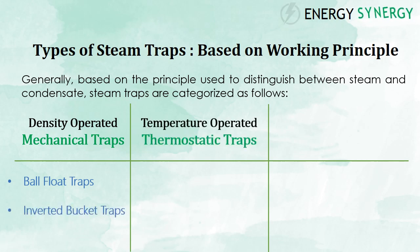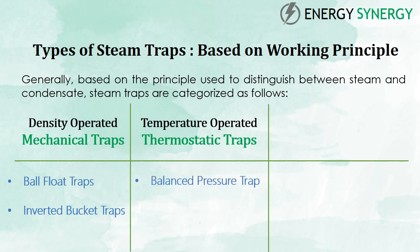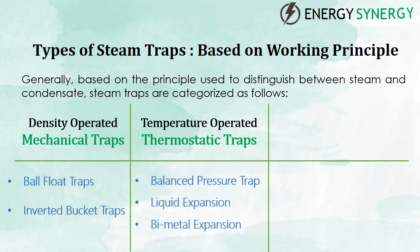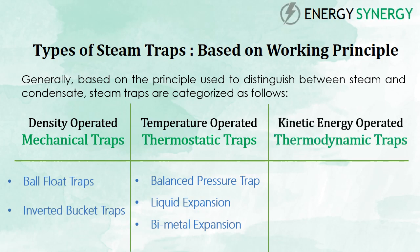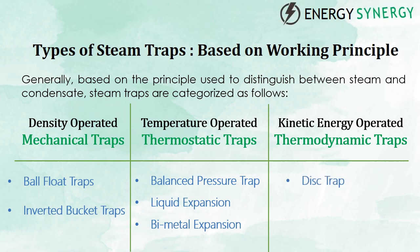Number two is temperature-operated traps, that is thermostatic traps. Thermostatic traps are categorized into three types: number one is the liquid expansion trap, and number two is the bimetal expansion trap. Number three is kinetic energy-operated traps, that is thermodynamic traps. Thermodynamic traps are divided into three categories: number one is the disc trap, number two is the orifice trap, and number three is the impulse trap.